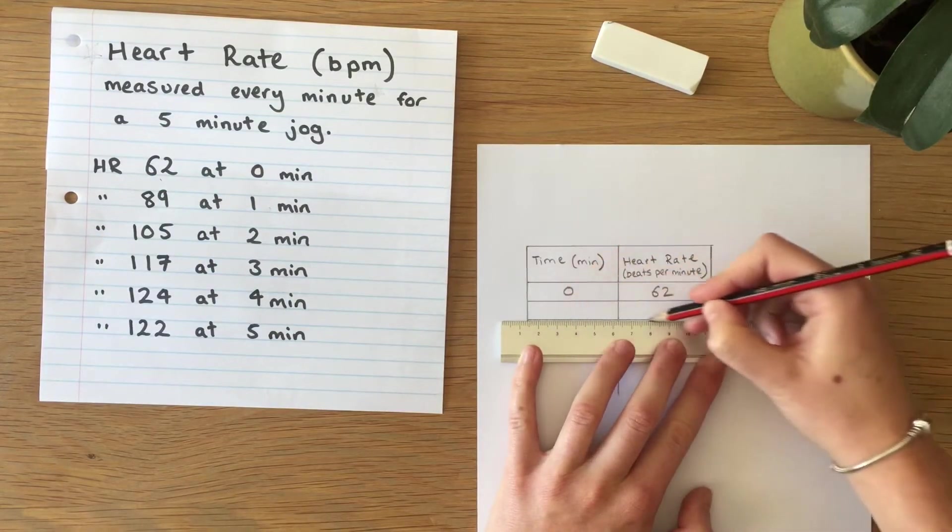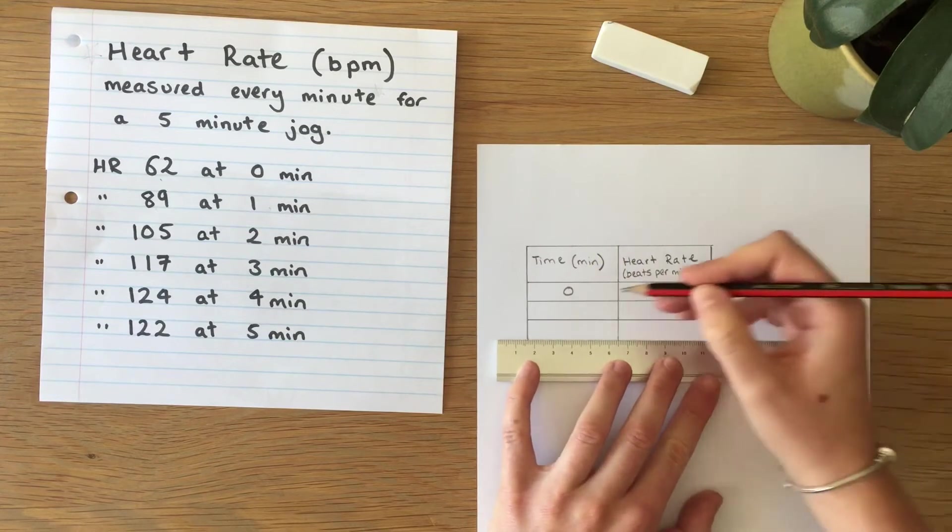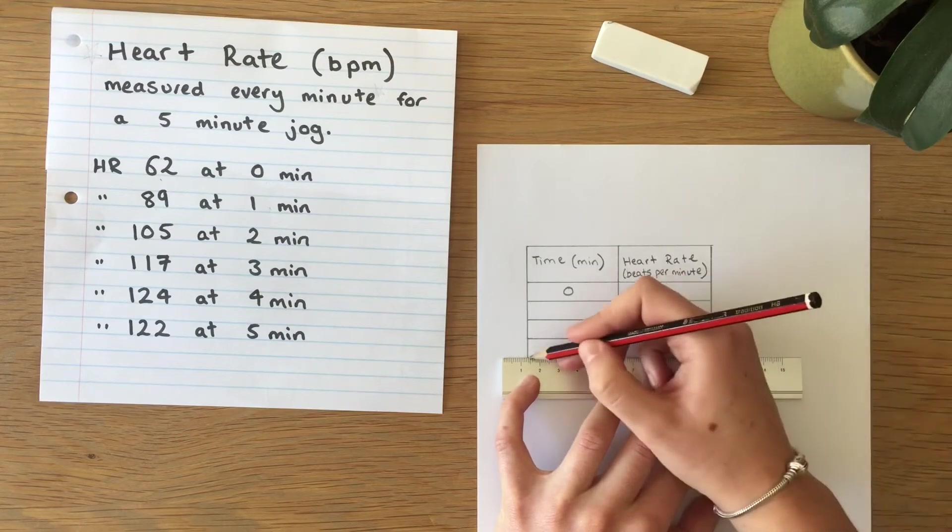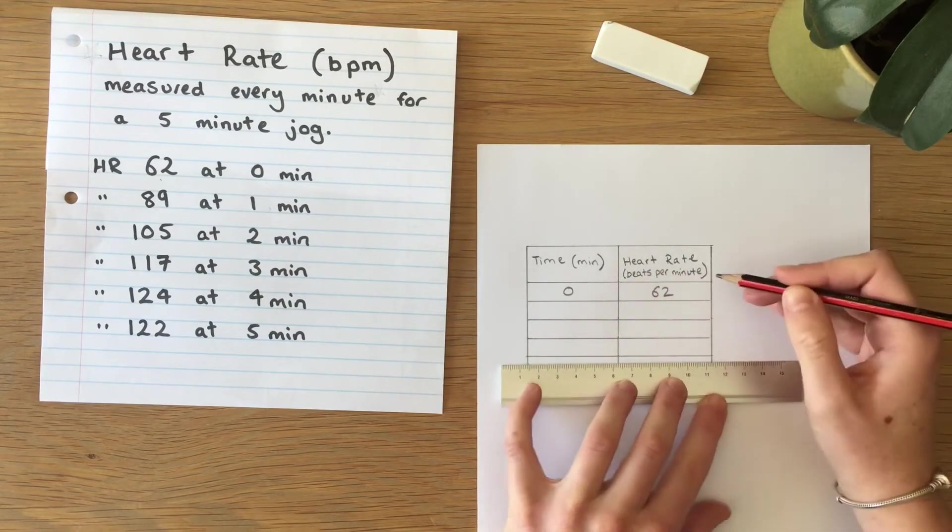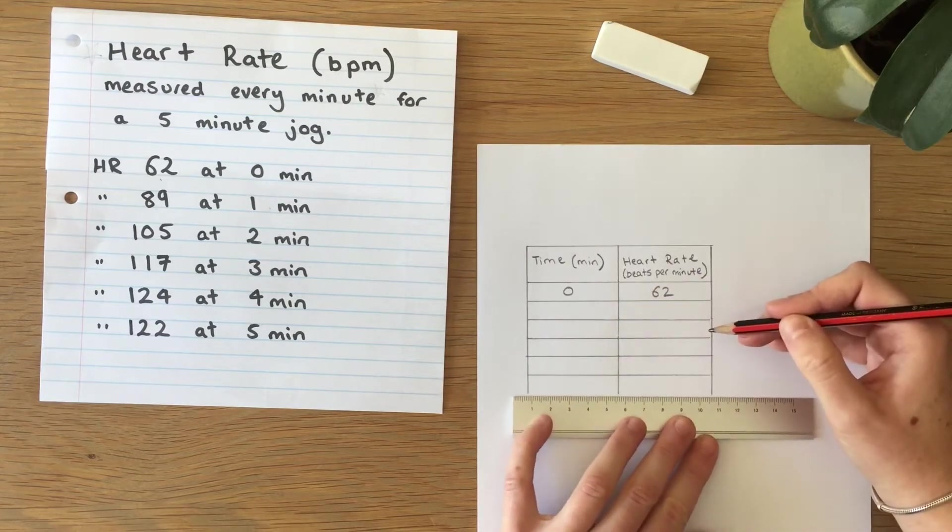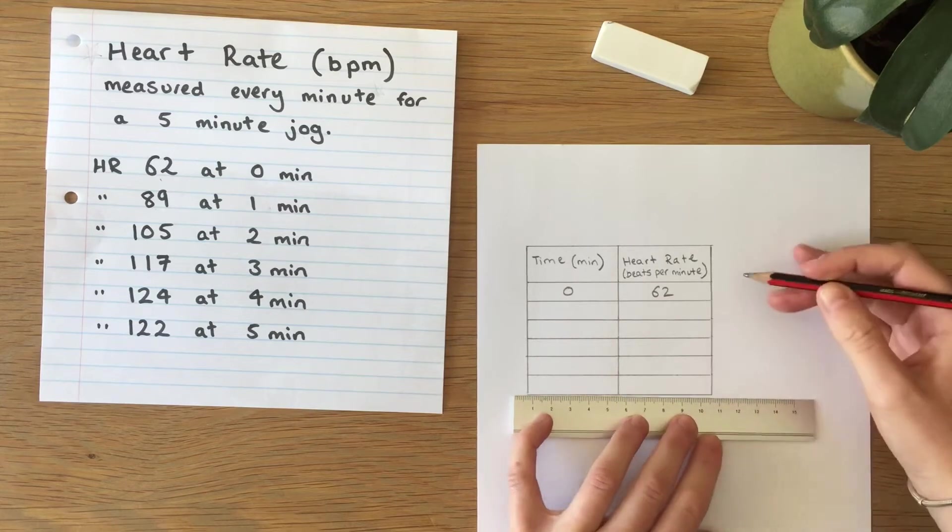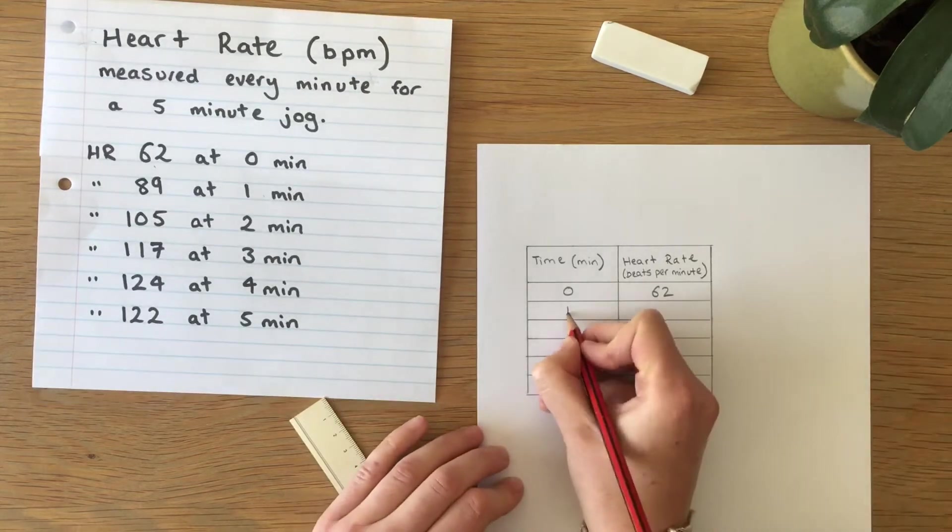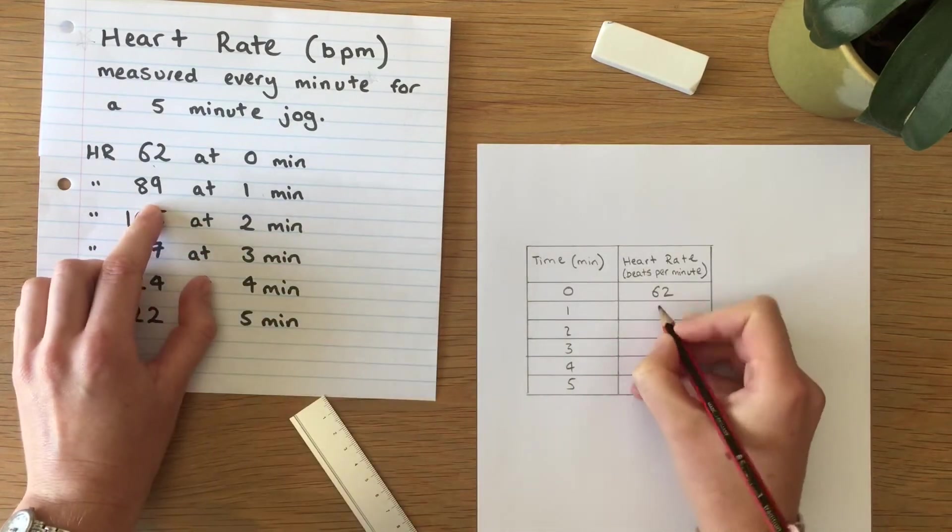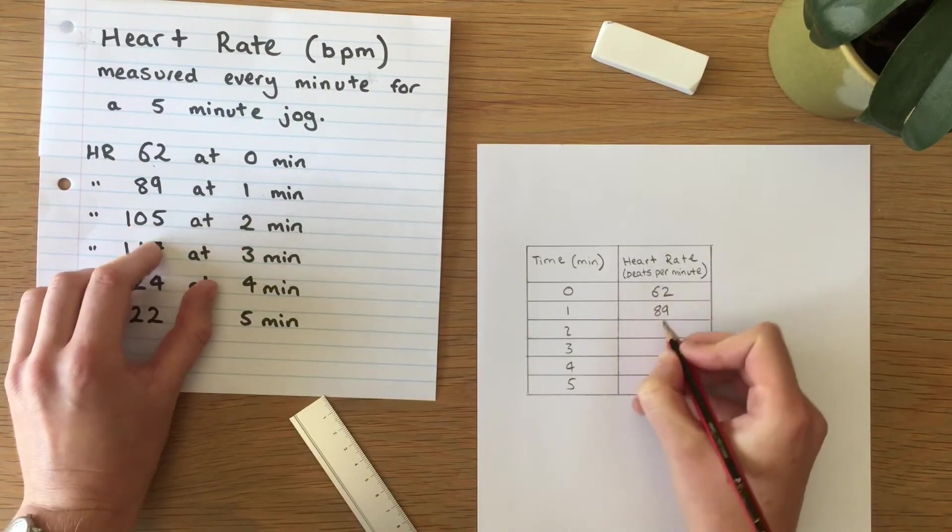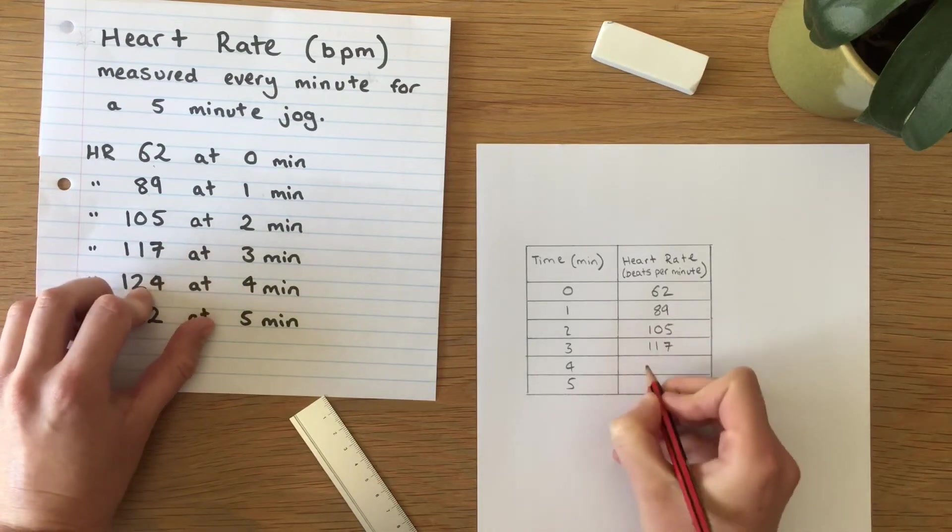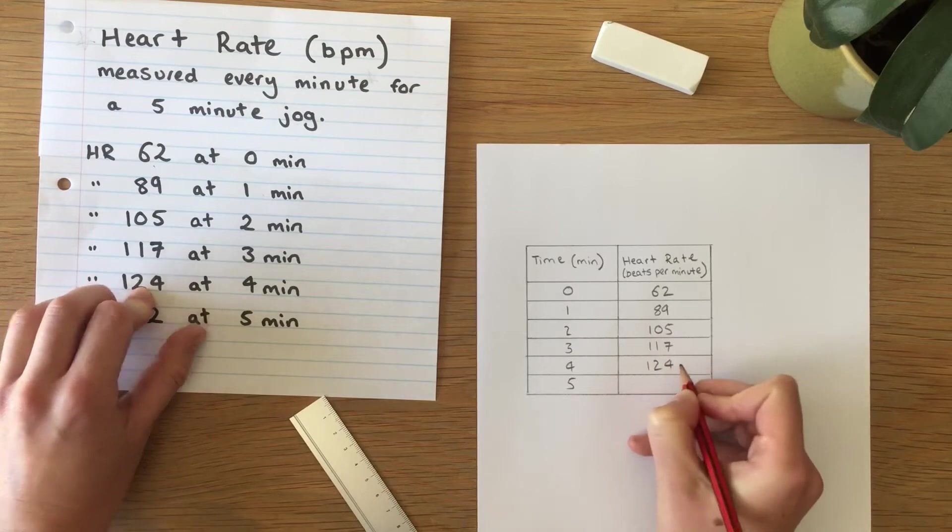And then we will add the rest of the data making sure we use a ruler to keep things nice and neat. And then we go one minute, two minute, three, four, five, making sure that we copy down our raw data correctly because you will lose marks in an exam if you input the incorrect data.